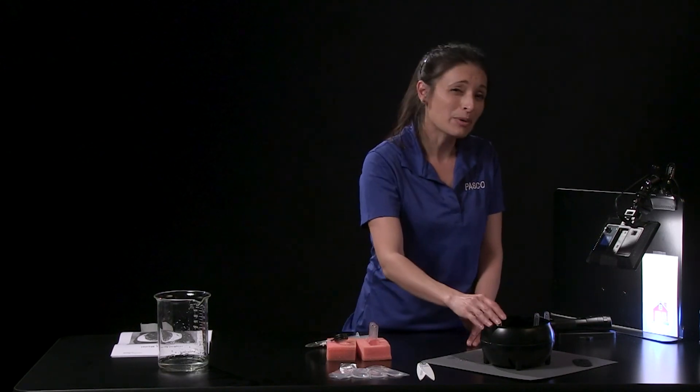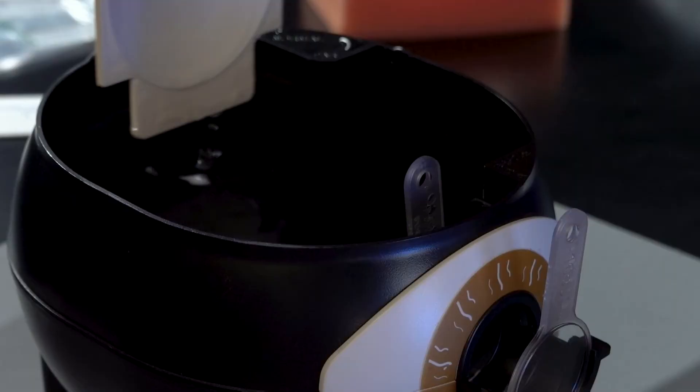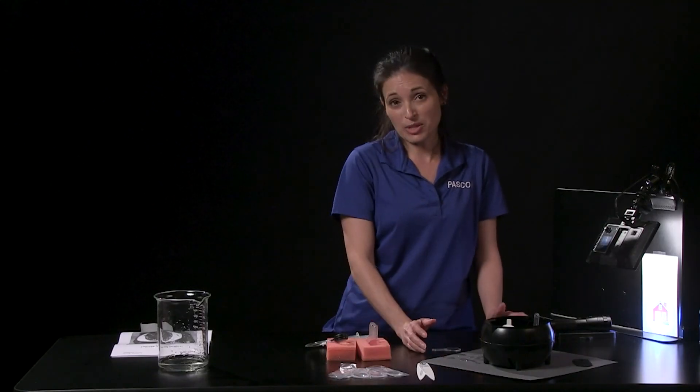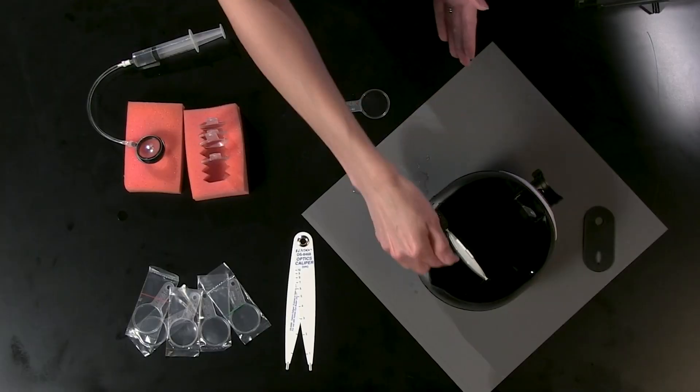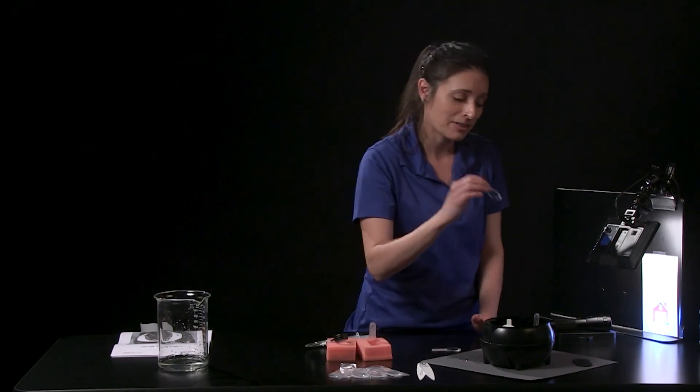A farsighted person has an eyeball that is too short, making the distance from the lens system to the retina too small. This causes the image of near objects to be formed behind the retina. Farsightedness can be corrected using eyeglasses that have a convergent lens.